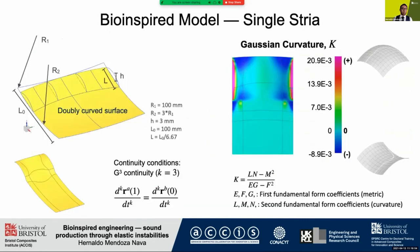Here a simplified model comprised of a single stria is proposed. Our approach is purely geometrical so no pre-stress is considered in this model. The geometry is derived from a double curved surface and the stria is generated by interpolating surface segments ensuring a G3, or third derivative, continuity condition between adjoining surfaces. The resultant curvature of the geometry is conveniently shown through a Gaussian curvature map, where the regions that transition from positive to negative Gaussian curvature can be identified.